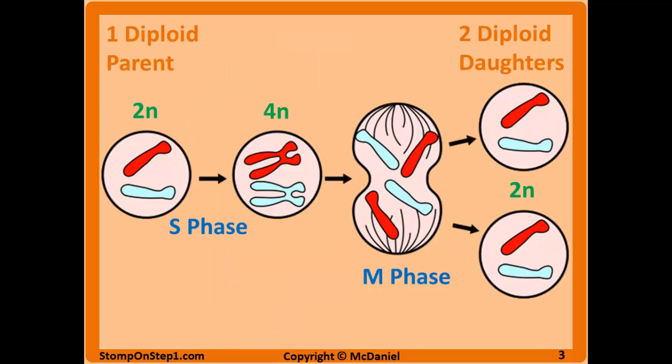Here we see a picture representing the actual cell cycle. We start with one diploid parent and we end up with two identical daughter cells. We start out as a 2N cell, which replicates its DNA to create a 4N cell via the S phase, or synthesis phase. The M phase is where the two cells are actively dividing, and finally, at the end of the division, we end up with the two identical daughter cells.